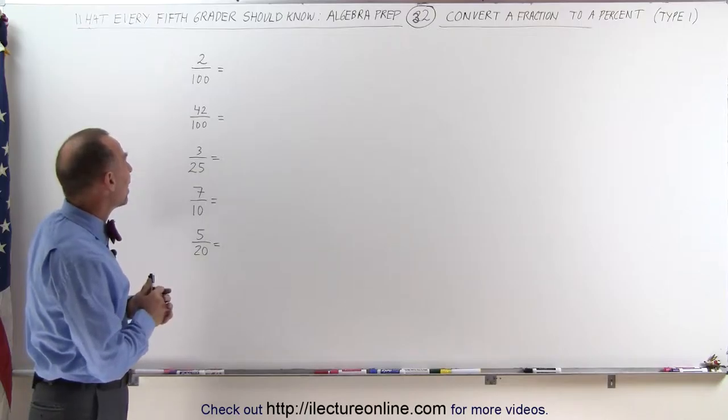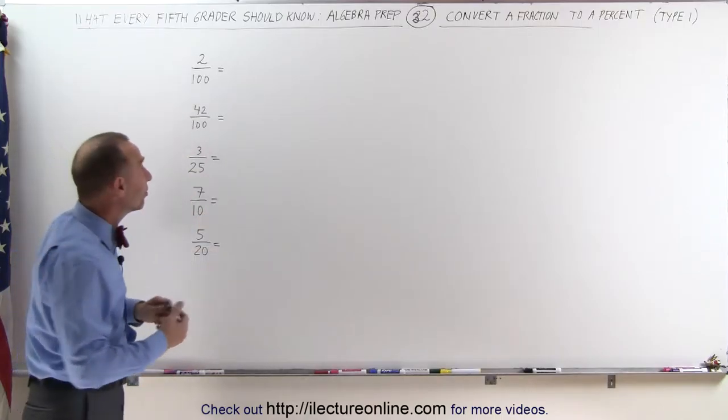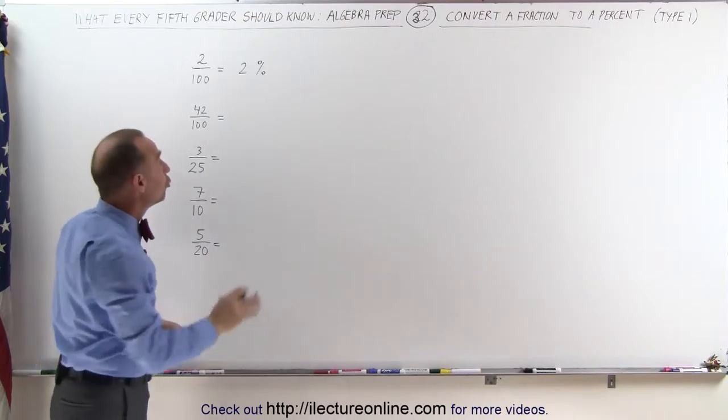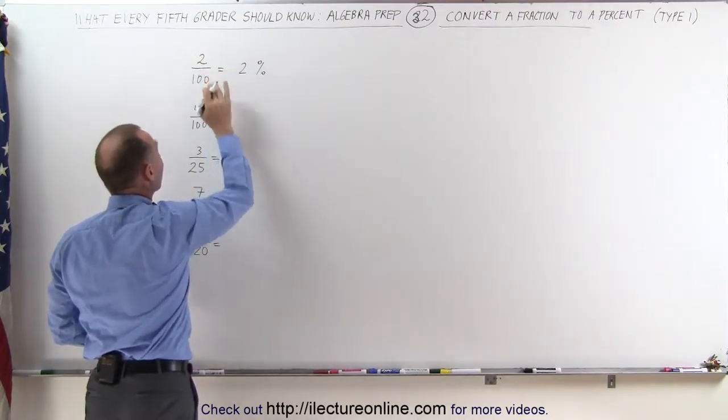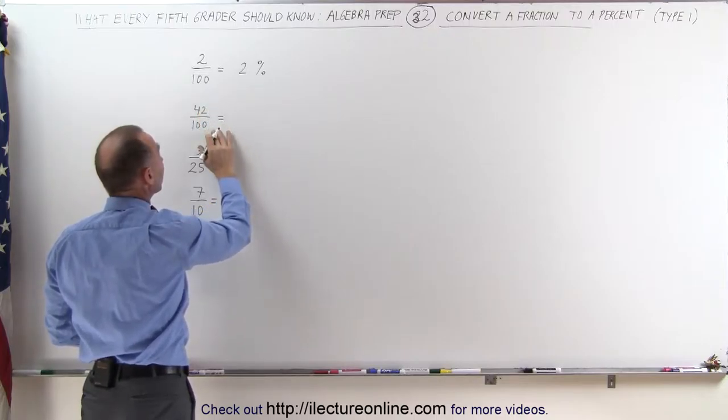Let me tell you why it's so easy when we have 2 divided by 100. We can simply take the numerator and write it as 2%, because that's really the definition of a percentage. 2% means 2 divided by 100. 42% means 42 divided by 100, and thus 42 divided by 100 must be 42%.